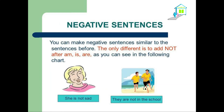Now we need to know what negative sentences are. You can make negative sentences similar to the sentences before. The only difference is to add 'not' after am, is, or are: I'm not, is not, are not — as you can see in the following chart.